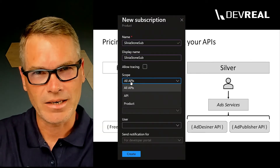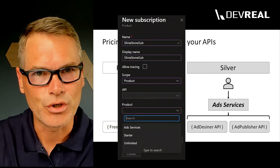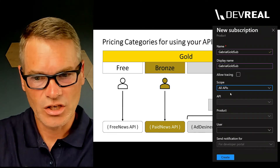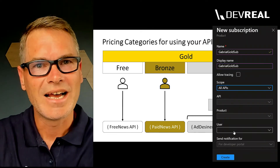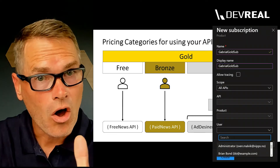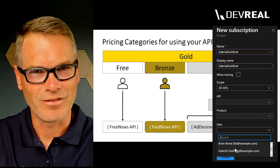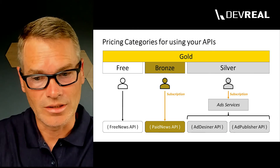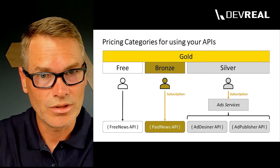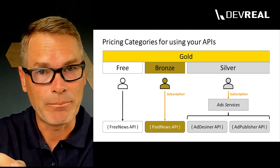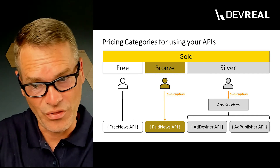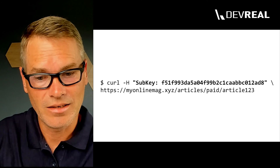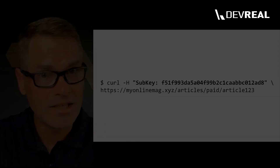We can bundle those in APM products. And finally, there's the Gold category that contains all APIs in a nutshell. A subscription describes the relation between a user and the APIs that are accessible for this user, by sending a subscription key as part of a request.